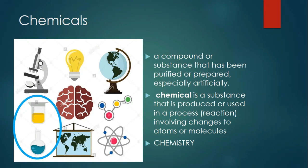Chemicals. Chemical is a compound or substance that has been purified or prepared specially artificially. Chemical is a substance that is produced or used in a process reaction involving changes to atoms or molecules. It will be discussed in your chemistry subject.